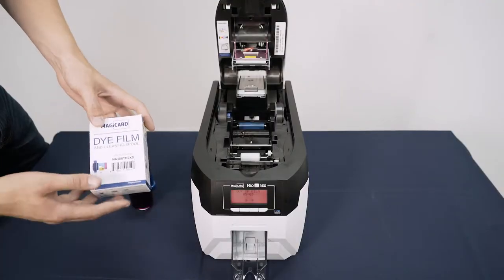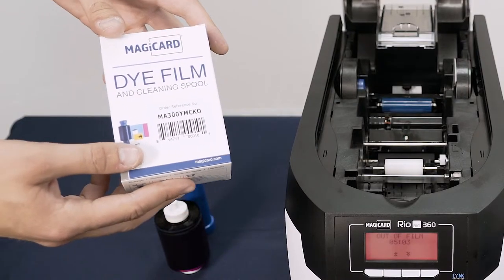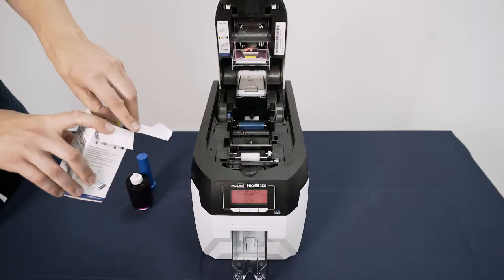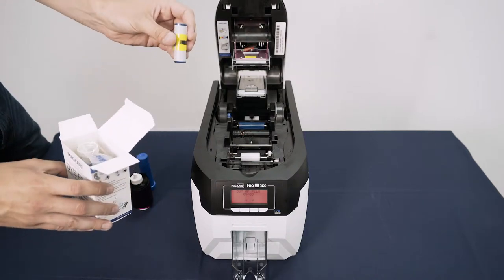Take your new pack of die film and remove the tacky cleaning roller from the box, then discard all packaging followed by the plastic sleeve that surrounds both the white and blue spools.